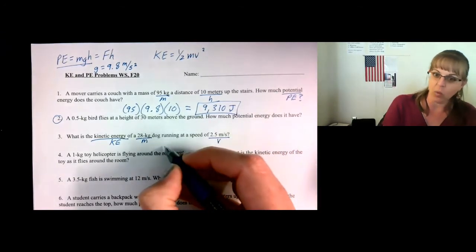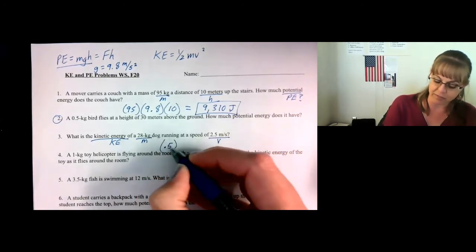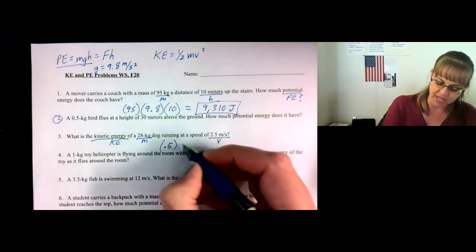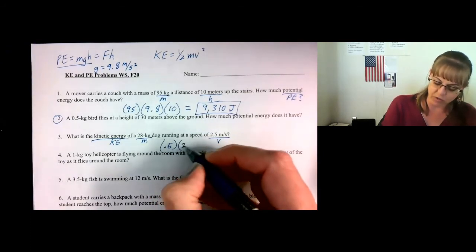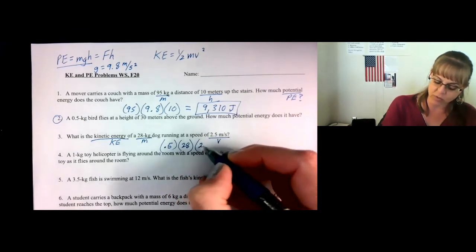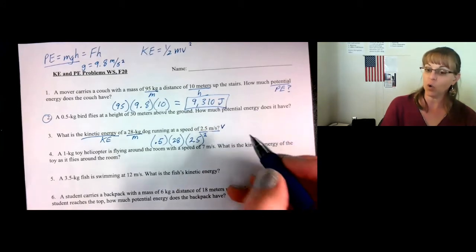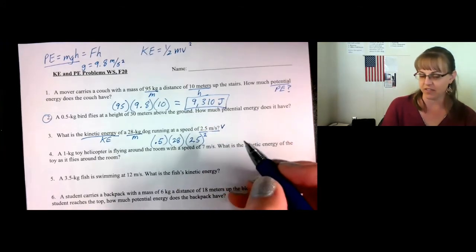So we do one-half mv squared. Instead of writing a half, I like to write 0.5, because that's easier for me to type on my calculator, times the mass, which is 28, times the velocity squared, which is 2.5 squared. Only the velocity is squared, not the rest.